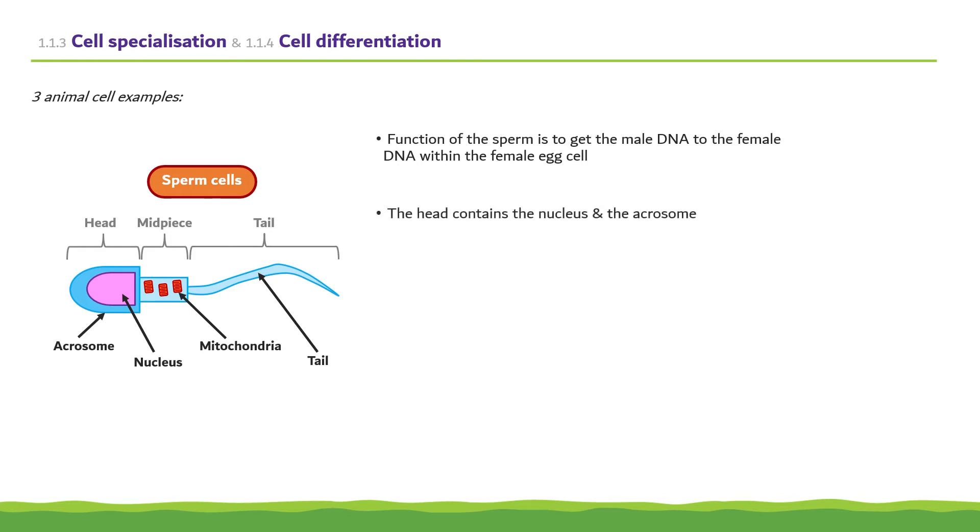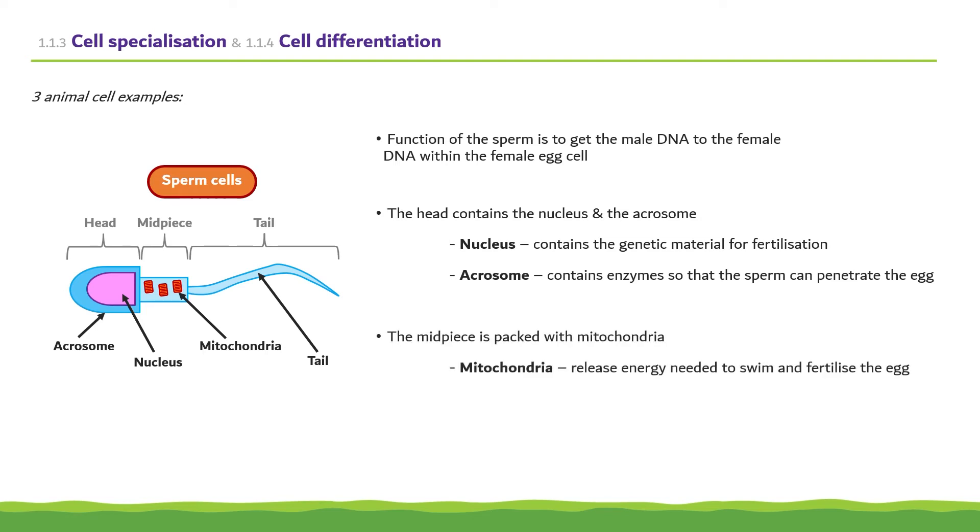The head of the sperm contains the nucleus and the aquasome. The nucleus contains the genetic material for fertilization, and the aquasome contains enzymes so the sperm can penetrate the egg. The midpiece is packed with mitochondria. The mitochondria release energy which is required for the sperm to swim and fertilize the egg. Finally, the tail enables the sperm to swim.